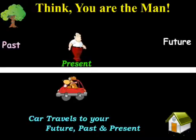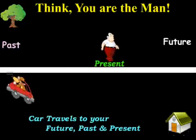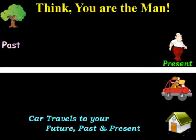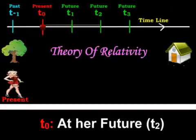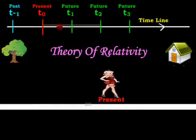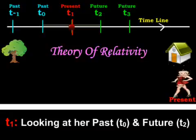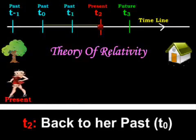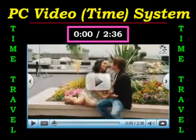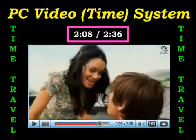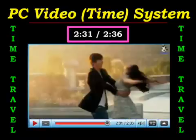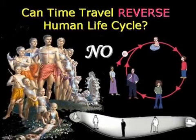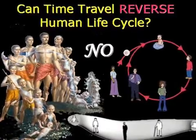See how the doggy car travels to your future, past, and present. Another example for time travel. Natural laws are beautiful phenomena and should not be confused with time travel.